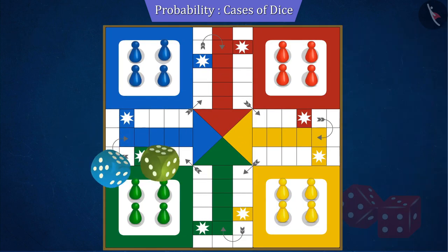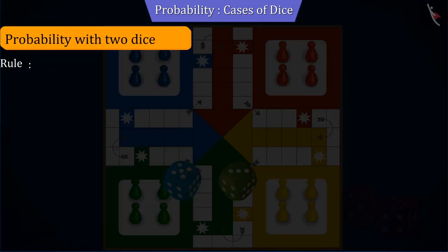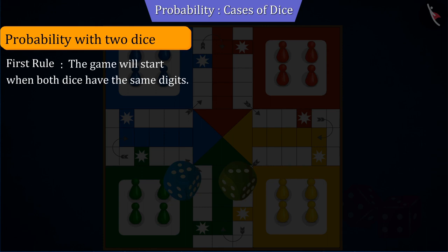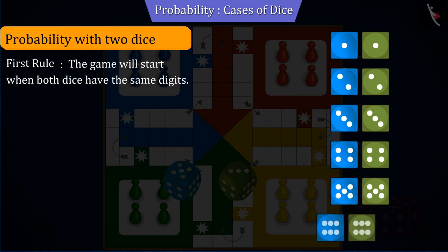This Ludo game with two dice has some rules. The first rule is that the player will start the game only when both dice have the same digits.